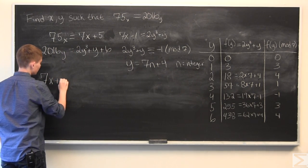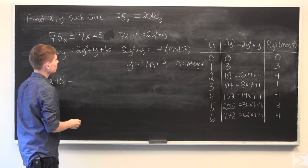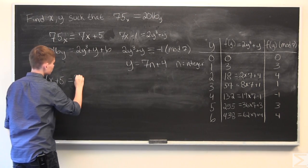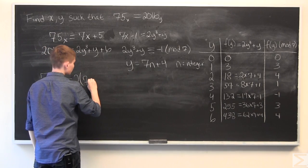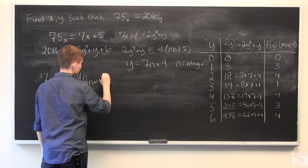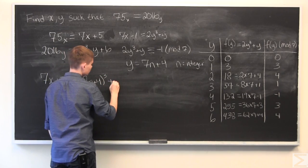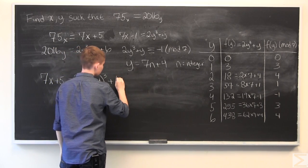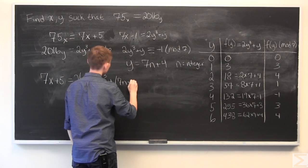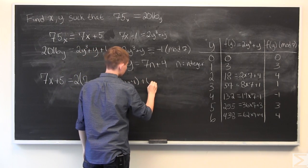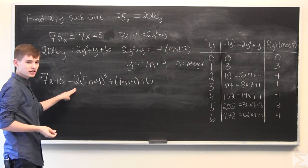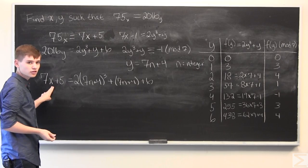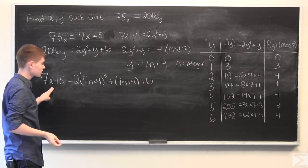So, 7x plus 5. And we have 2. And we'll plug in this for y. And plug it in for y again. Okay, so I will simplify this and we will get an expression for the set values of x.